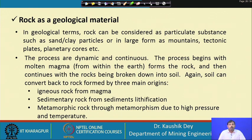Rock can be classified into three basic groups: igneous rock, sedimentary rock, and metamorphic rock. Igneous rock is rock that comes directly from magma — it cools down in multiple stages and solidifies into a strong rock material. When igneous rock is subjected to change due to atmospheric activities, human activities, metasomatic activities, or other igneous activities, it is converted into sedimentary rock or metamorphic rock.